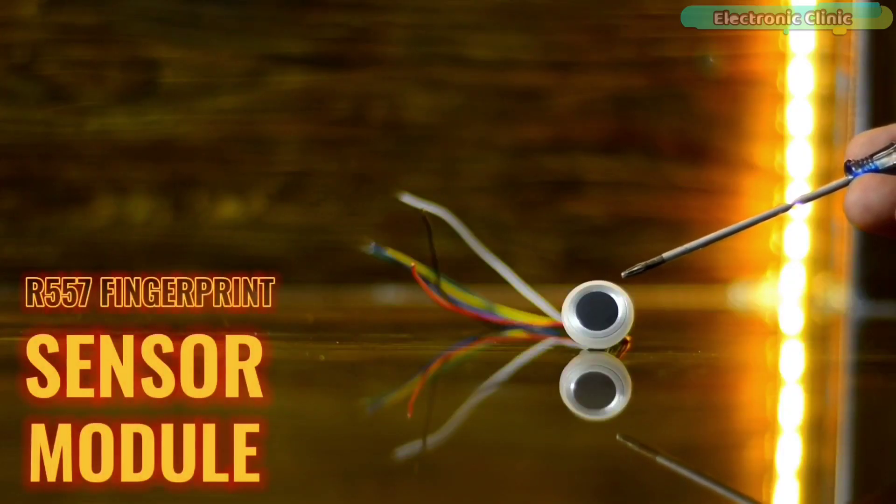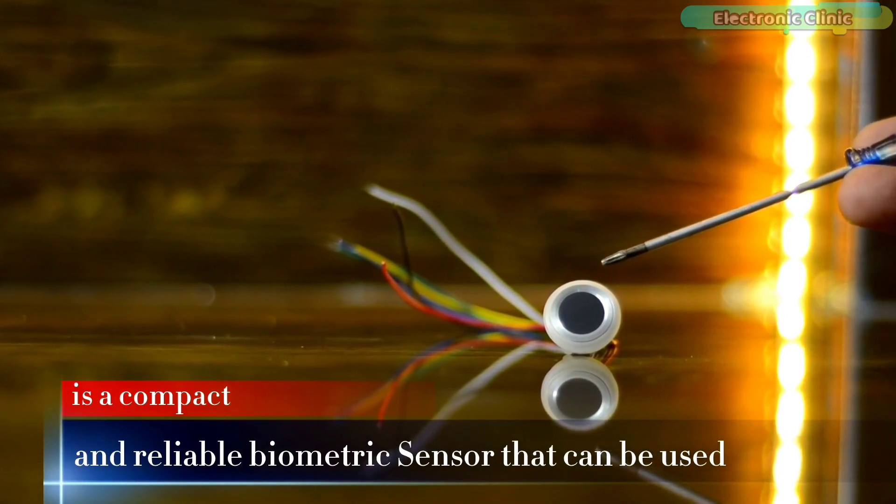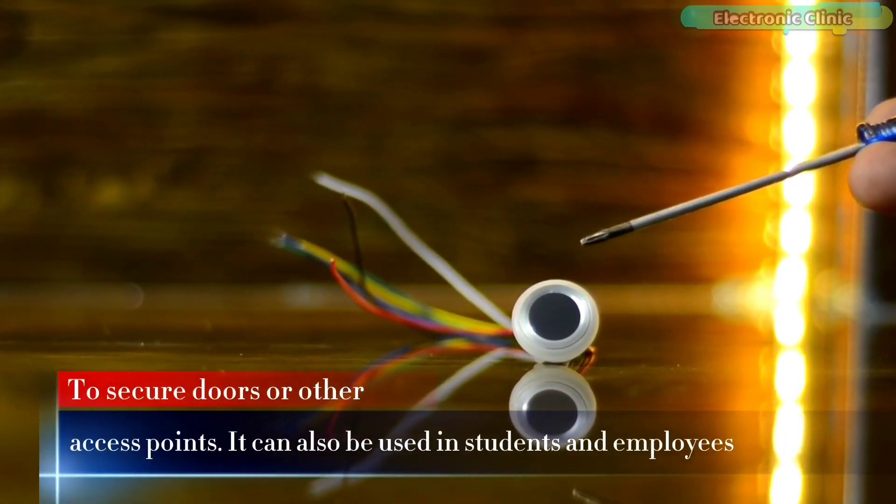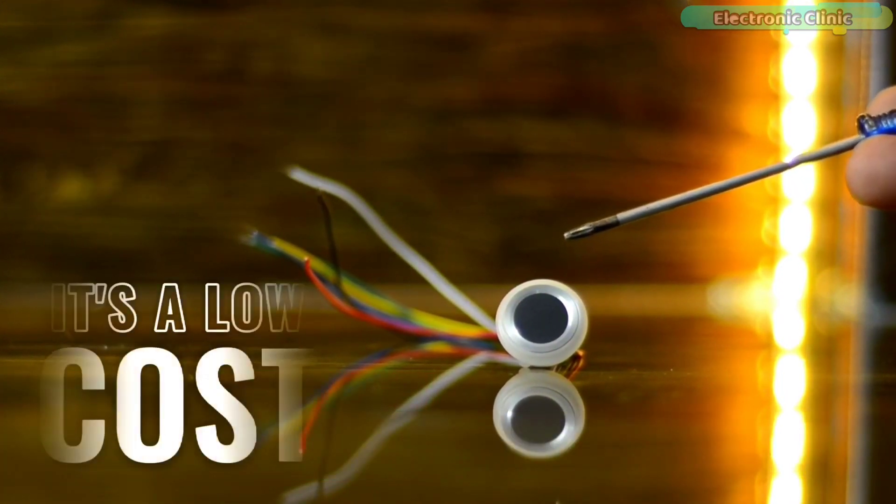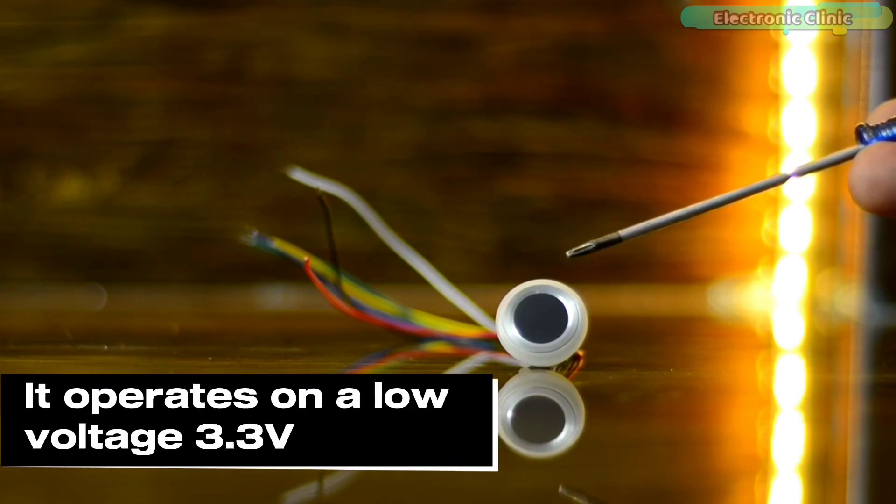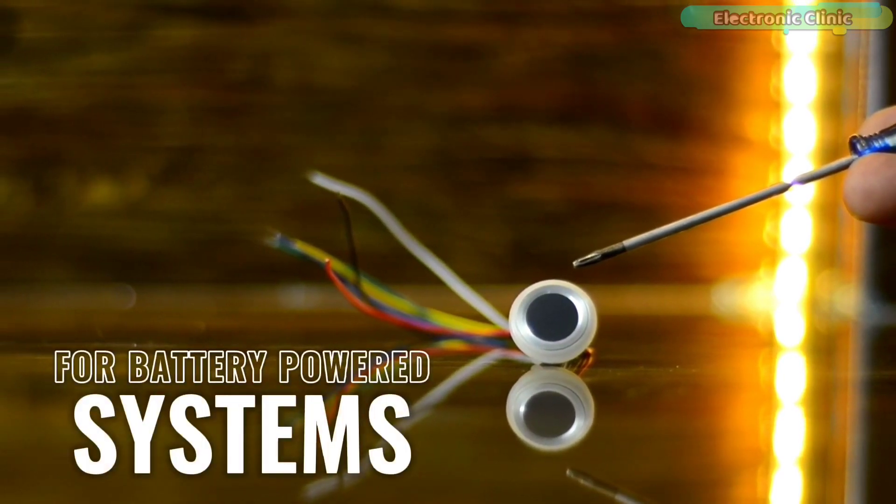The R557 fingerprint sensor module is a compact and reliable biometric sensor that can be used to secure doors or other access points. It can also be used in students and employees attendance systems. It's a low cost and low power fingerprint sensor. It operates on a low voltage of 3.3 volt, making it ideal for battery powered systems.